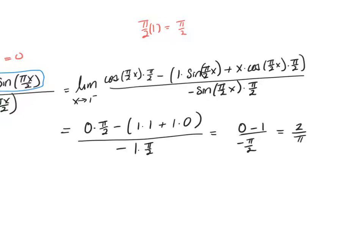Every time we do L'Hopital's, there are going to be some examples later where we actually don't have to. After we rearrange stuff, it ends up being like infinity times infinity — which is just infinity. But every time we do L'Hopital's, we consider the numerator separately from the denominator so we don't have to use the quotient rule, unless the numerator or denominator itself has a fraction in it.